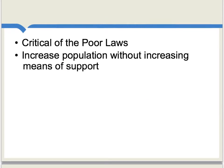When it came to economic policy, Malthus in his first edition was very critical of the poor laws. Basically, he thought that by supporting poor people, they increased population without increasing the means of support for that population. Subsequently, Malthus very often was considered to have a cruel point of view on this issue.